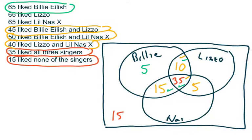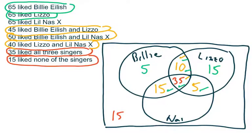Let's move on to Lizzo. Same story: 65 has to represent the sum of all numbers within Lizzo's circle. We've already accounted for 10, 35, and 5 — that's 50. 65 minus 50 means there are 15 more people, representing people who like Lizzo only.